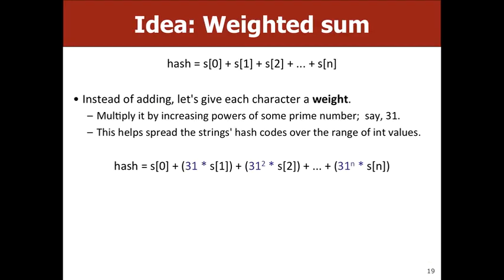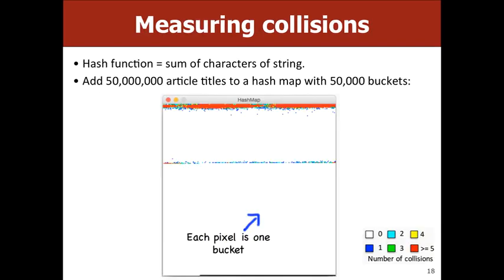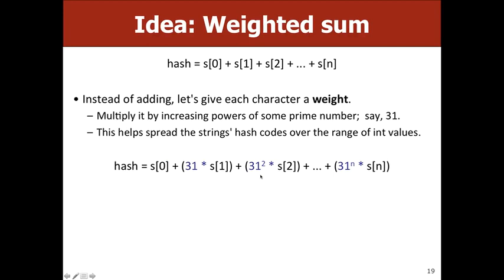To solve the anagram problem and get better distribution, we can use a weighted sum: each character's value is multiplied by a power of a prime number based on its position. So the character at index 0 is just itself, index 1 is the character times 31, index 2 is times 31 squared, and so on — this gives a better distribution.